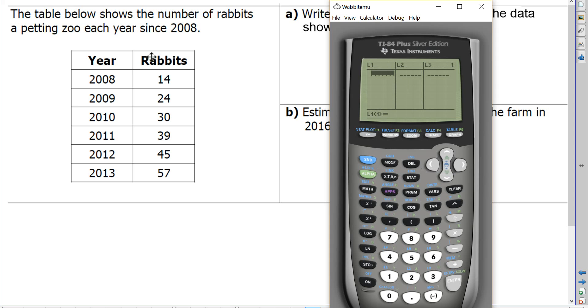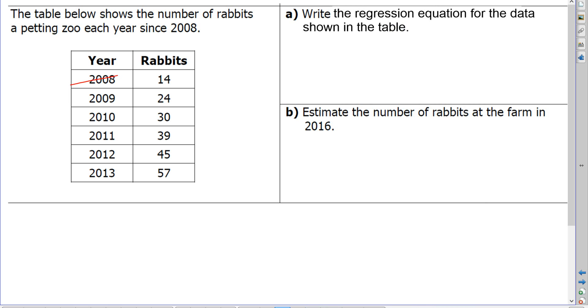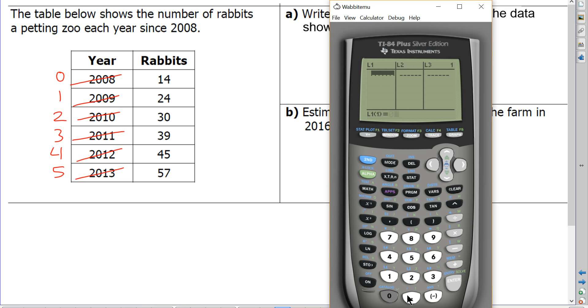So for this question, even though 2008 is my value, I'm actually going to use zero, because that is my first year. 2009 will be one year later. 2010 will be two years later. Et cetera. So even though I know the year is 2008, that's my initial year. So I actually have to use zero as my value there.